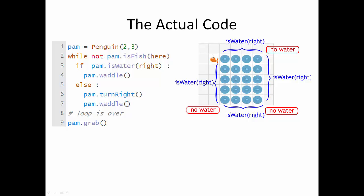Here's what the actual code looks like. We start with our while loop, while not pam.isfish here, and layer our if statement in there, with the if and else parts. If pam.iswater right, then waddle, and when that's not true, Pam will turn right and waddle.